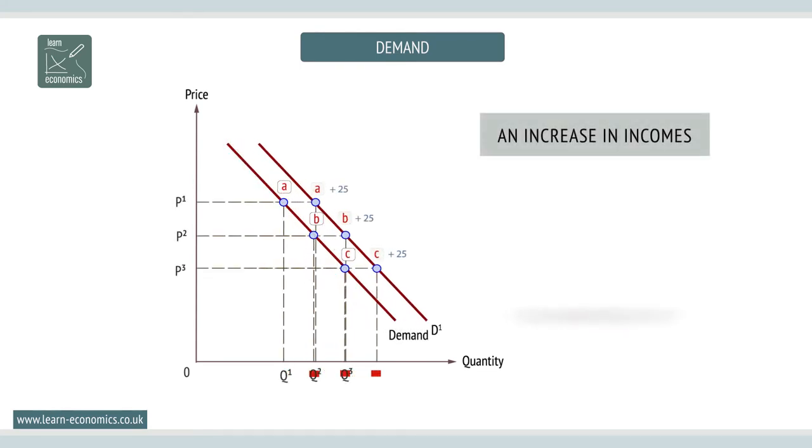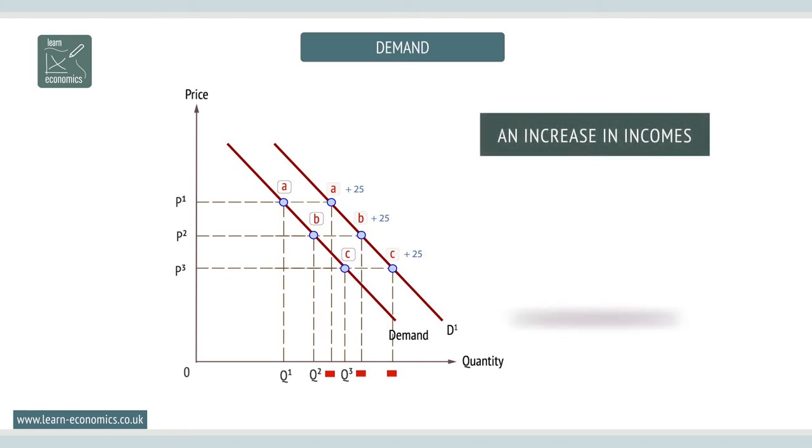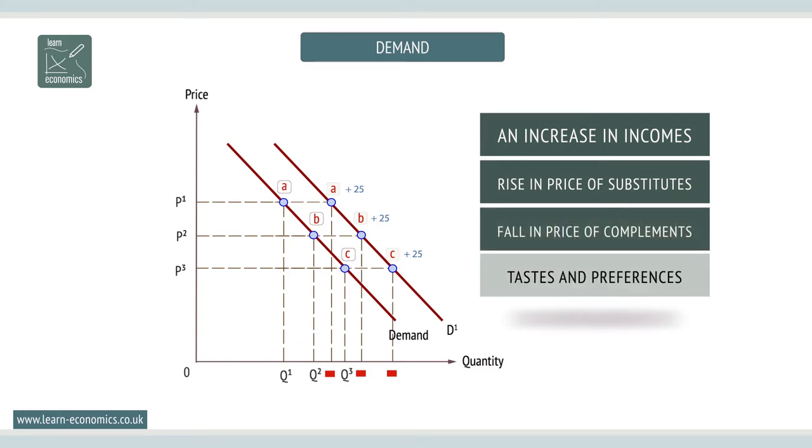A demand curve can shift to the right and increase, or to the left, a decrease. With an increase, more goods are demanded at all prices. Possible factors causing this include higher incomes, assuming a normal good, an increase in the price of a substitute, a fall in price of a complement, and changes in tastes and preferences.